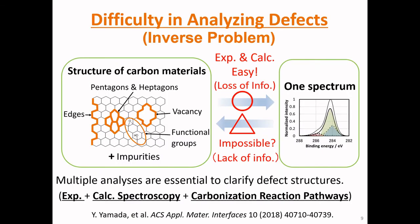Carbon materials contain various defects such as edges, pentagons, heptagons, vacancies, and functional groups, in addition to impurities. It is easy to obtain experimental spectra such as IR, Raman, XPS, and NMR. However, spectral analysis reduces the information of the structures because peaks of similar bonding states generally appear very close to each other, causing difficulty in differentiating structures. This prevents us from estimating accurate structures of carbon materials. Therefore, multiple analyses combining experimental and calculated spectroscopy and carbonization reaction pathways are essential to clarify defect structures.